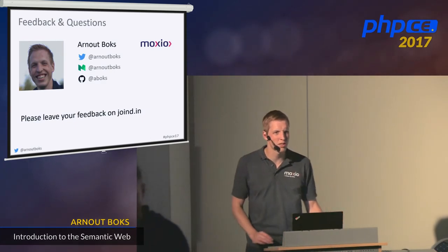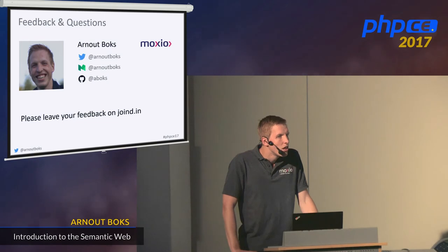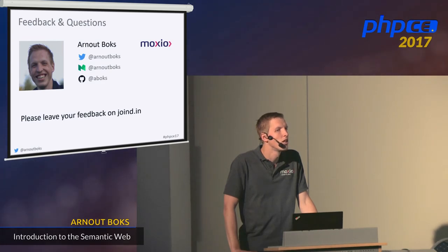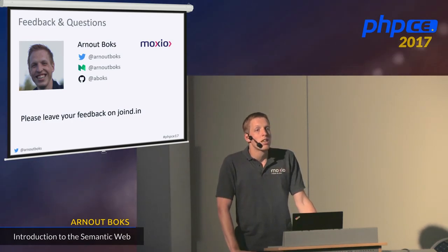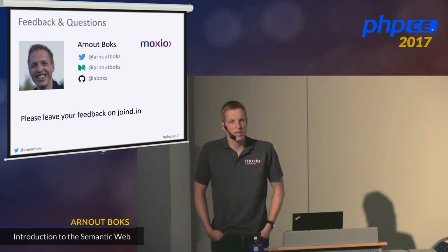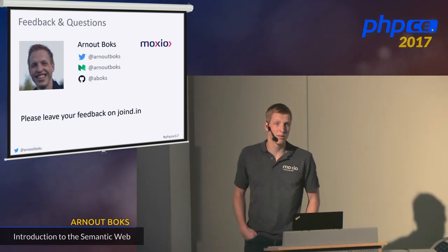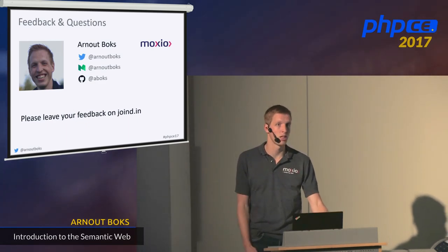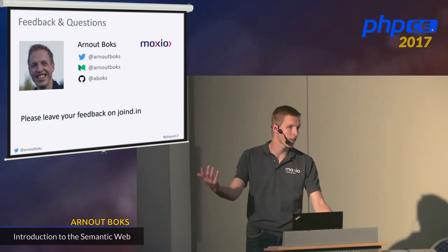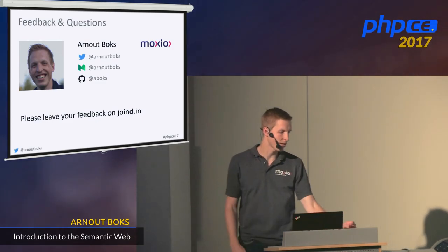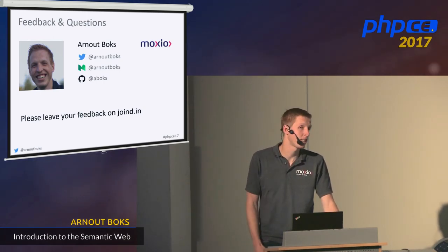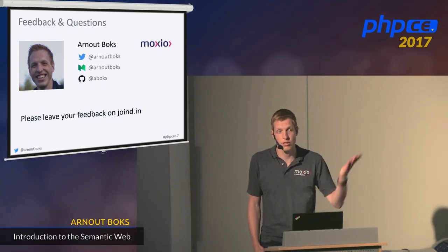Second question: do we have existing ontologies for things like family connections — for example, encoding that a granddaughter is a daughter of a daughter? For family relations, I don't really know for certain. It might be in Friend of a Friend since that's a social network vocabulary where you can describe who is your father. And people who research family origins might have also made something like that. But I don't know for sure — maybe you can find it through LOD Cloud.